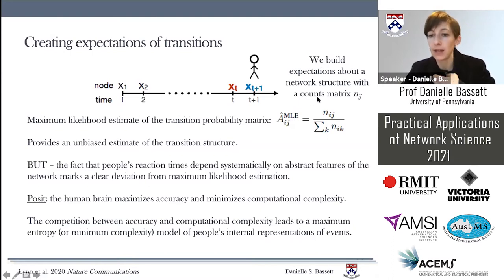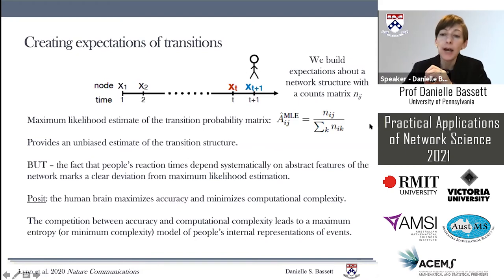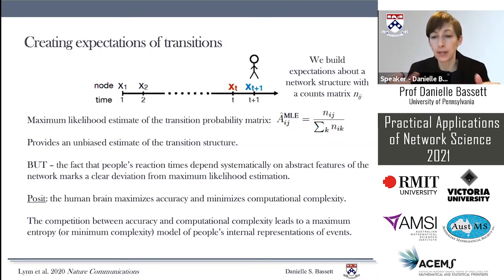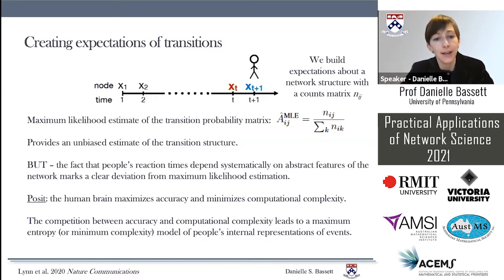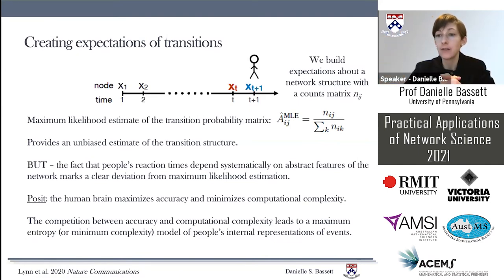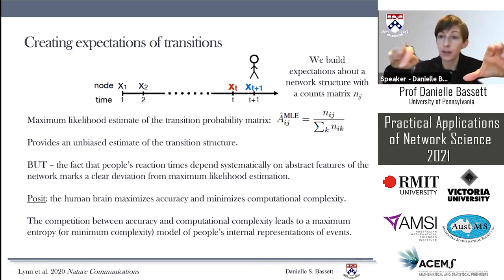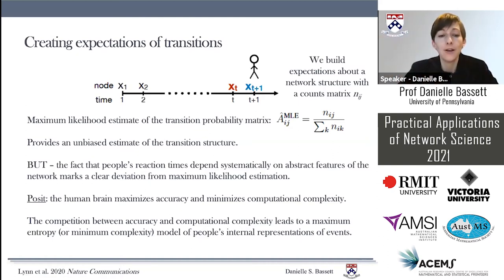Let's suppose that humans are doing something like maximum likelihood estimation. They would build a counts matrix N_ij — the number of times node i goes to node j — and divide by the number of times i goes to anything, giving them the transition probabilities. I'll call this Â_MLE. This provides an unbiased estimate of transition structure. But the fact that humans' reaction times depend systematically on abstract global features of the network marks a clear deviation from maximum likelihood estimation.